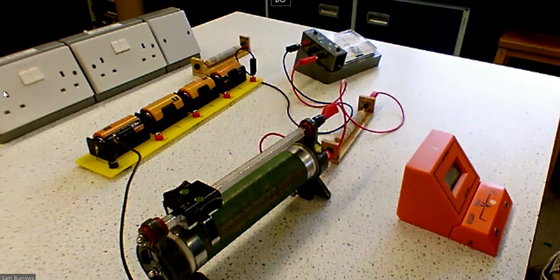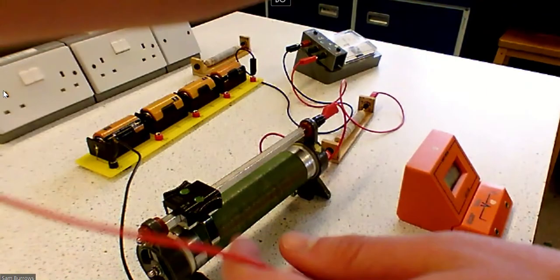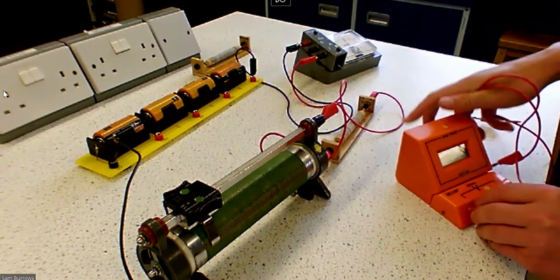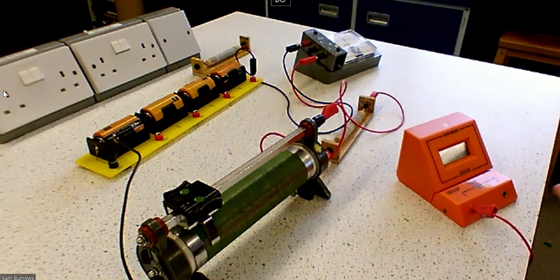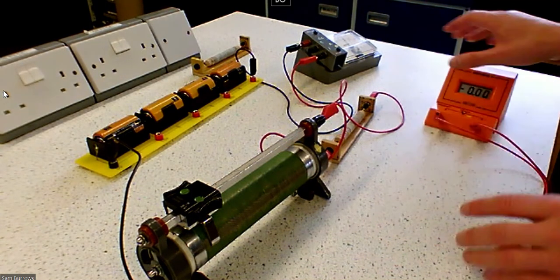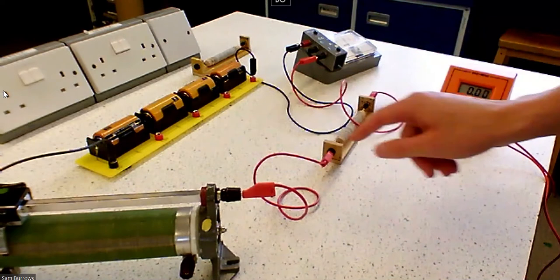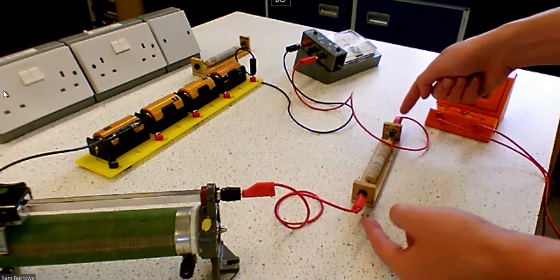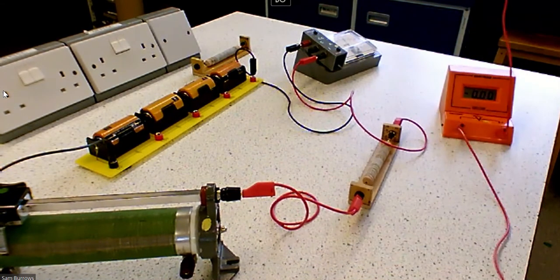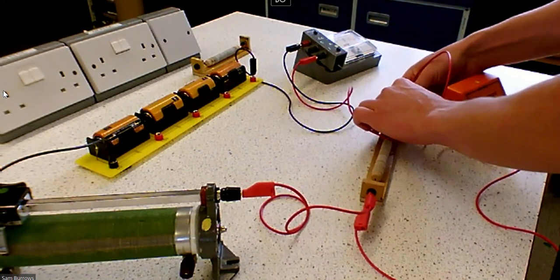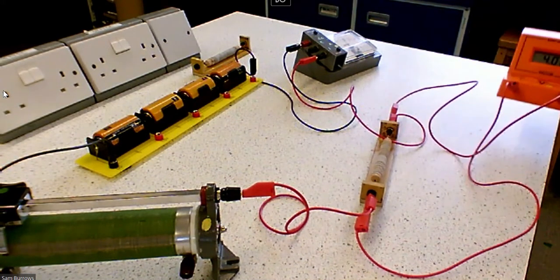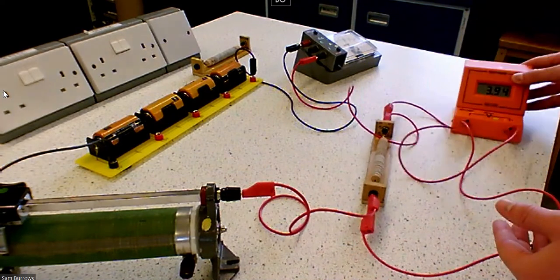And the last thing we need to do is get our voltmeter in. So voltmeters are nice and easy, we always plug them in parallel so just give yourself two wires into your voltmeter like this. And we want to measure the potential difference across our resistor so I'm going to plug it in each of these ends here. So let's do that.